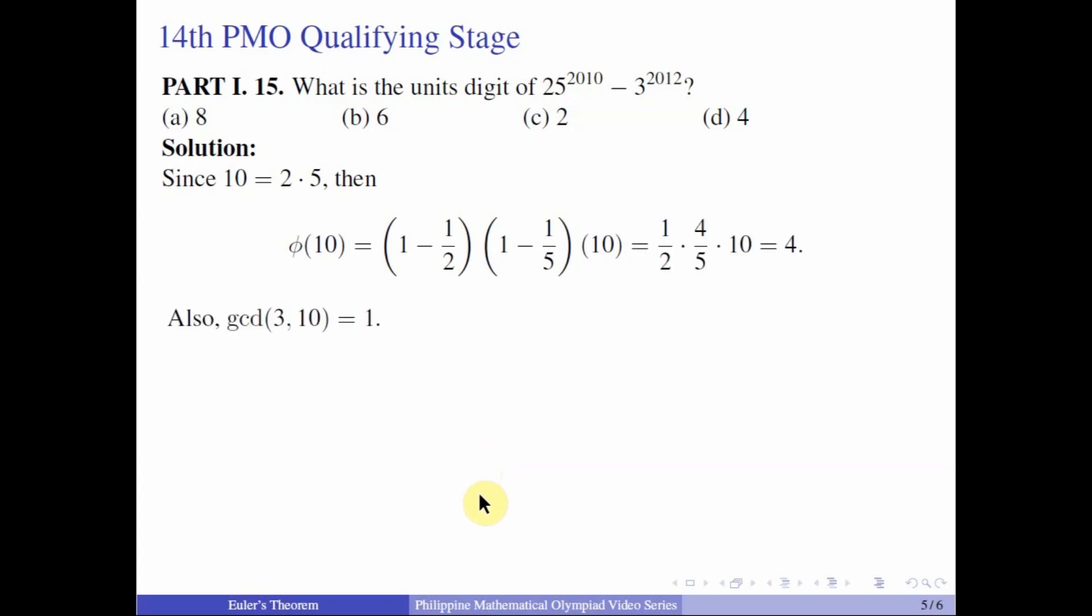And then we know that 3 and 10 are relatively prime. And so by Euler's theorem, we know that 3 raised to 4 is congruent to 1 mod 10. And then again, we will just be dividing the exponent by 4 and take the remainder. So 2012 is divisible by 4. We know that 3 raised to 2012 is congruent to 1 mod 10. And then now let us go to our original expression. So we know that 25 raised to 2010, so this is the power of 5, so you know that the units digit is 5. So this expression should be congruent to 5 minus 1 mod 10, which is 4 mod 10.